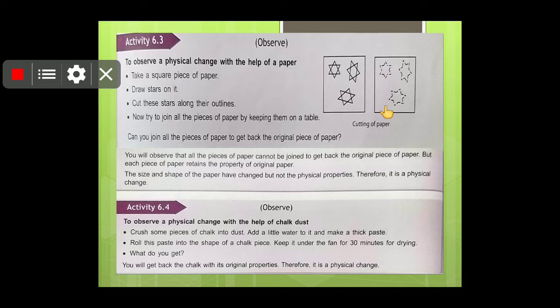See students, you will observe that the pieces of the paper cannot be joined to get back the original piece of paper. But each piece of paper retains the property of the original paper. So students, we cannot say that the tiny pieces of stars that we have cut will change. They will retain the properties of the big piece of paper only. Now students, the size and shape of the paper have changed, but not the chemical properties. Therefore it is a physical change.